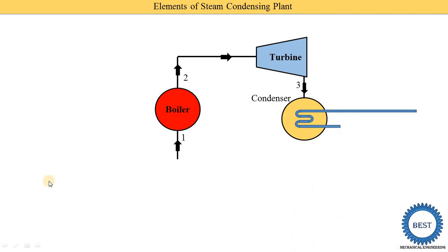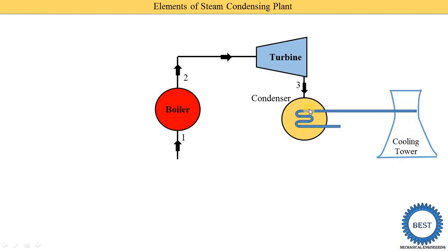In this diagram, you see this is the surface type condenser. The steam is passed from outside these tubes and the cooling water is passed through these tubes. The cooling water absorbs the heat energy from the steam, so the temperature of the cooling water is increased and we need to cool this hot water again.